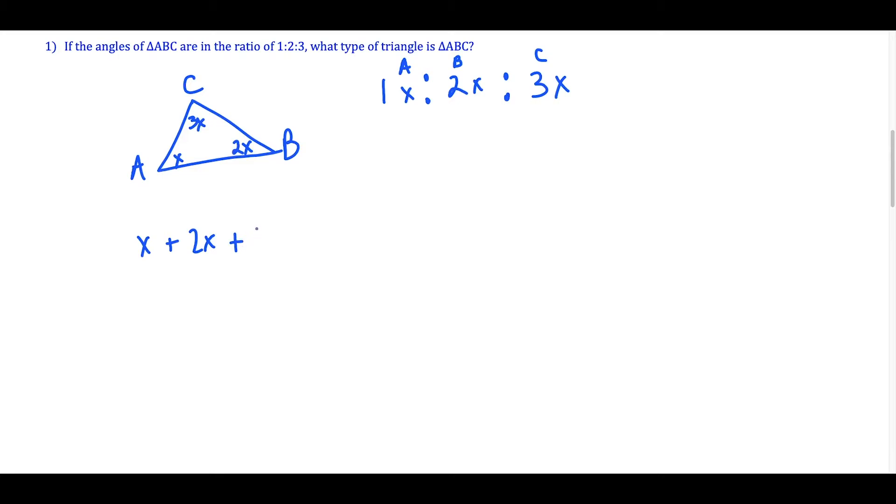So if I set up this equation, X plus 2X plus 3X equals 180 degrees, this is going to allow us to solve now. I have 1 plus 2 plus 3 is equal to 6, so 6 times X equals 180 degrees.